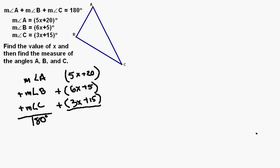We wind up getting, add the x's up, 5x and 6x is 11x, 11x and 3x is 14x. 20 plus 5 is 25, 25 plus 15 is 40. So we then have 180 degrees is equal to 14x plus 40.